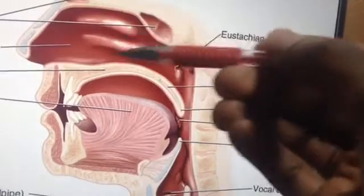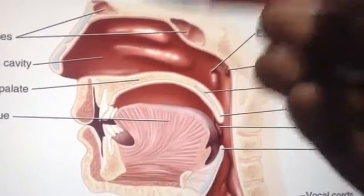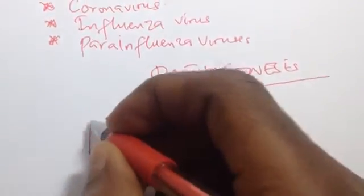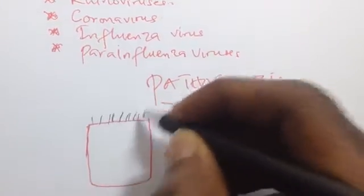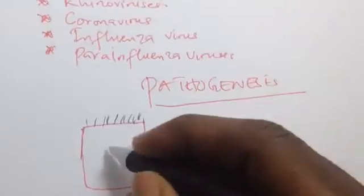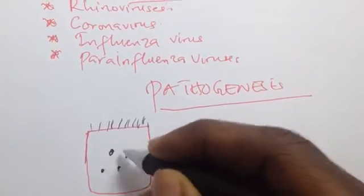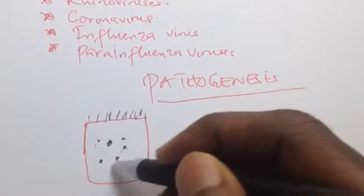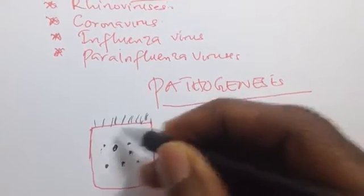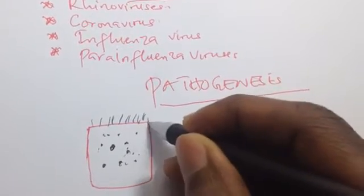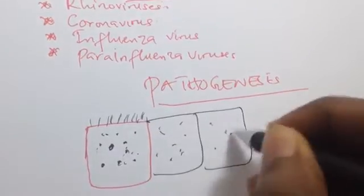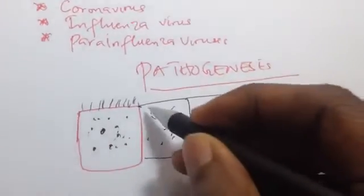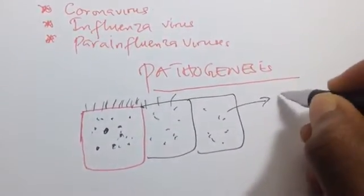In pathogenesis, the virus enters a cell and causes infection. Taking one cell as an example — the virus enters the cell, uses its cellular components to reproduce, and multiplies into many viruses. Many cells become infected, and these cells begin releasing signals called cytokines.